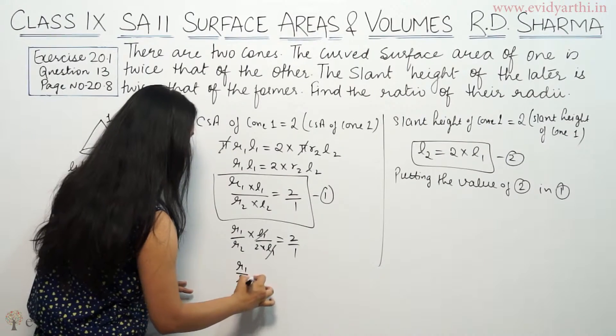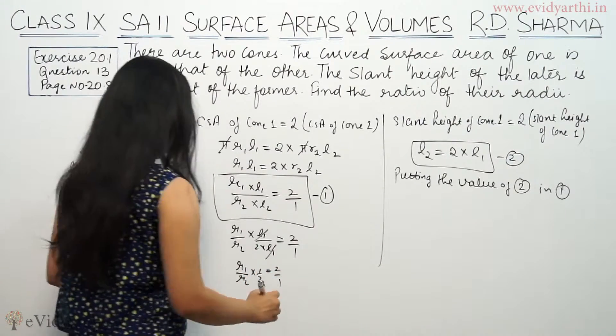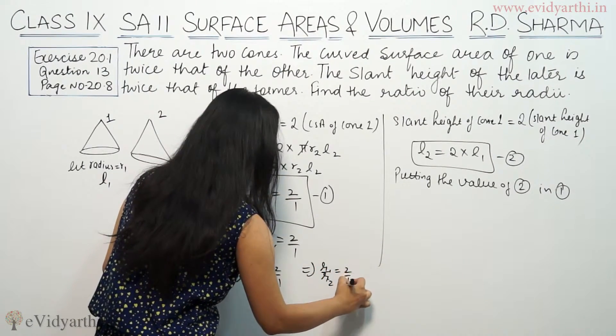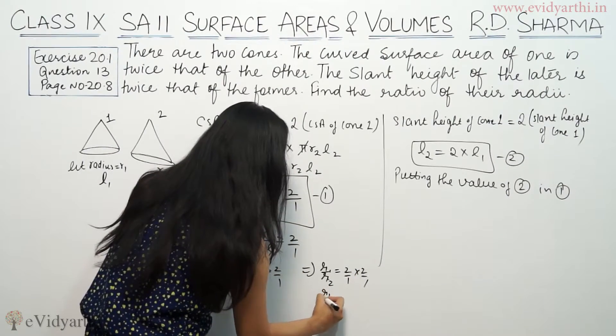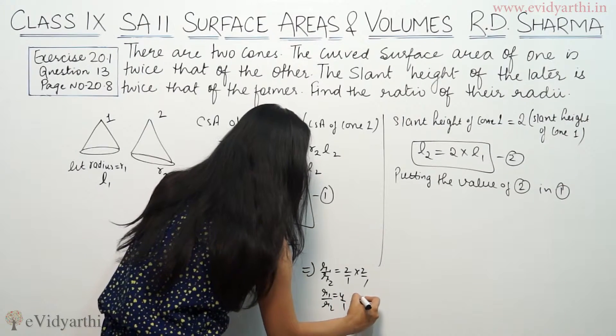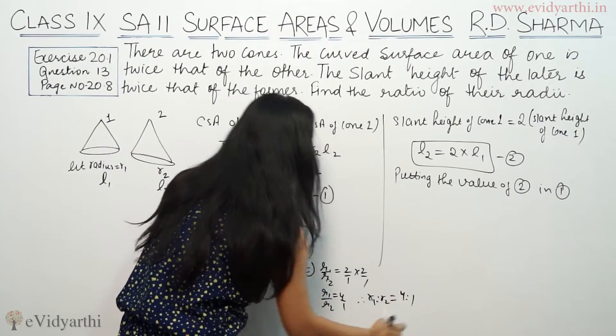So r1 by r2 into 1 by 2 equals 2 by 1. So we have r1 by r2 equal 2 by 1 into 2 by 1. So r1 by r2 is equal to 4 by 1. That means r1 is to r2 ratio is 4 is to 1.